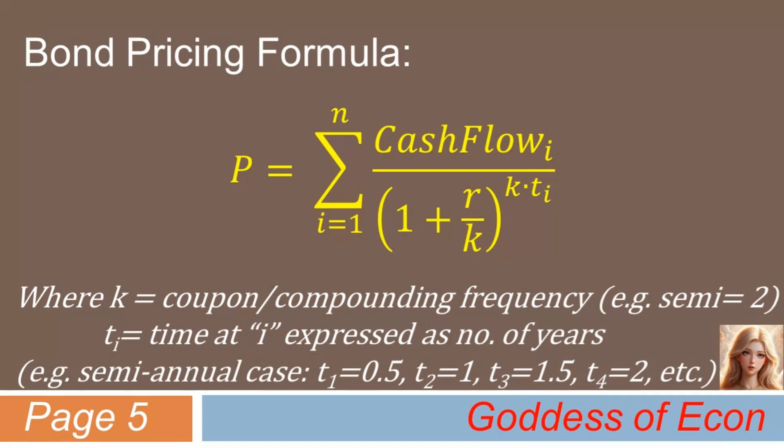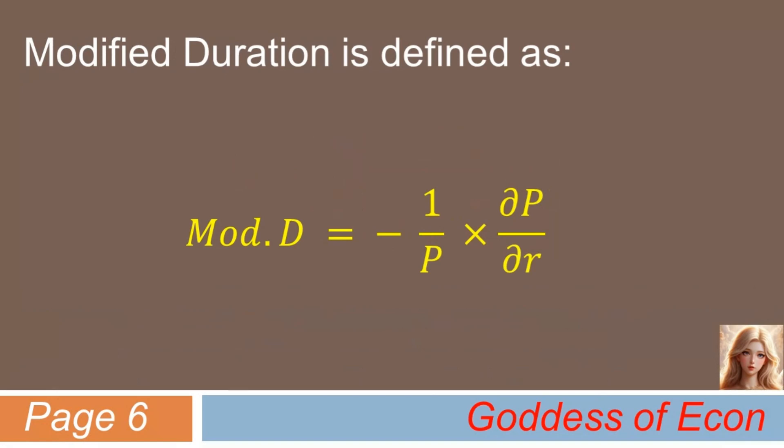Next, let's revisit the definition of modified duration. You can see that the only thing that is needed in the derivation of the modified duration formula is to find the expression for the partial derivative of p with respect to r. After that, you will only need to multiply it by negative 1 over p. Let's do that together.